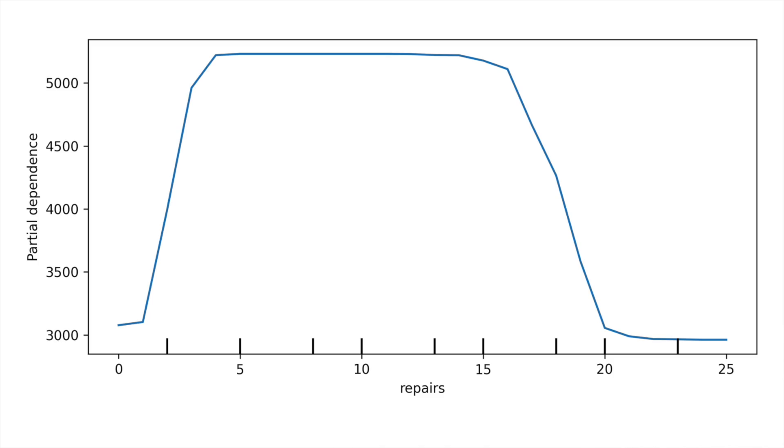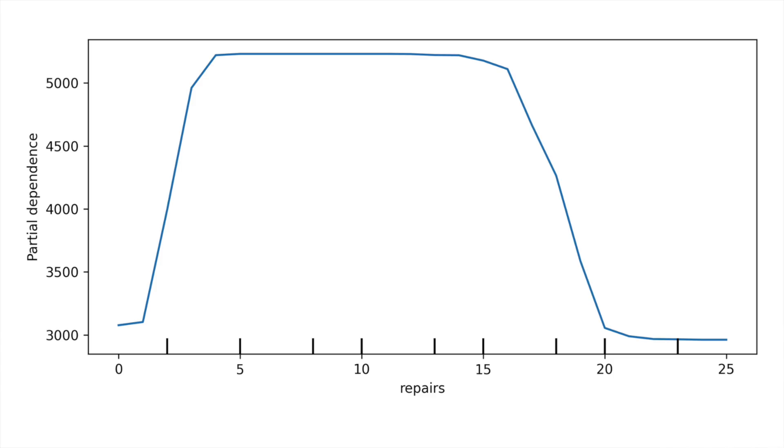Here we can see the PDP for the repairs feature. This is the number of repairs or services the car receives. Initially, the predicted price tends to increase with the number of repairs. Perhaps we would have expected a reliable car to have received some regular maintenance. Then, at around 16 or 17 repairs, the price tends to decrease. Excessive repairs may indicate that something is wrong with the car. Whatever the reason, we can see that the predicted price has a quadratic relationship with repairs.